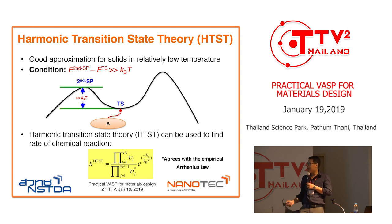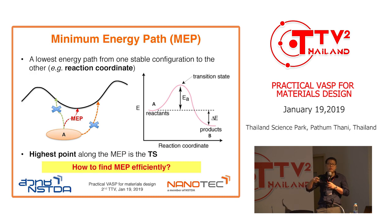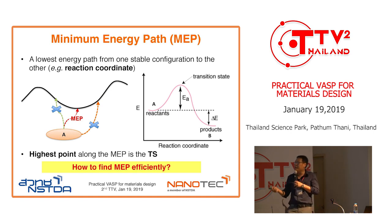This also agrees with the empirical Arrhenius law. When we look at chemical reactions, there's another term called the minimum energy path, or MEP. The MEP is the lowest energy path from one stable configuration to another — sometimes we call it the reaction coordinate. If you are trying to cross a mountain from side A to side B, the MEP is the way that goes through the lowest height between the two sides. That lowest point is the saddle point, which defines the transition state.